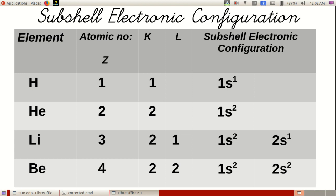For example, the atomic number of hydrogen is 1, so one electron is present in it. The electron is filled in the K-shell in the S-subshell. Its electronic configuration is represented as 1S1.